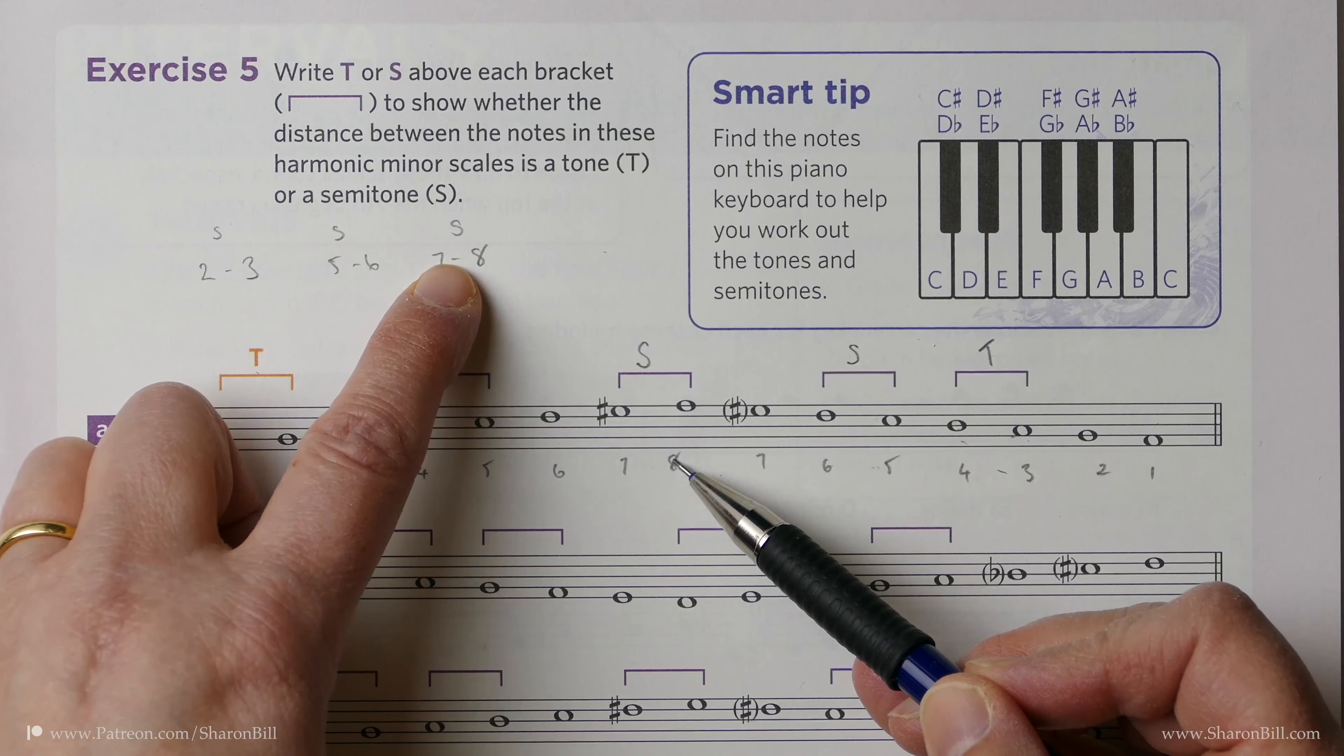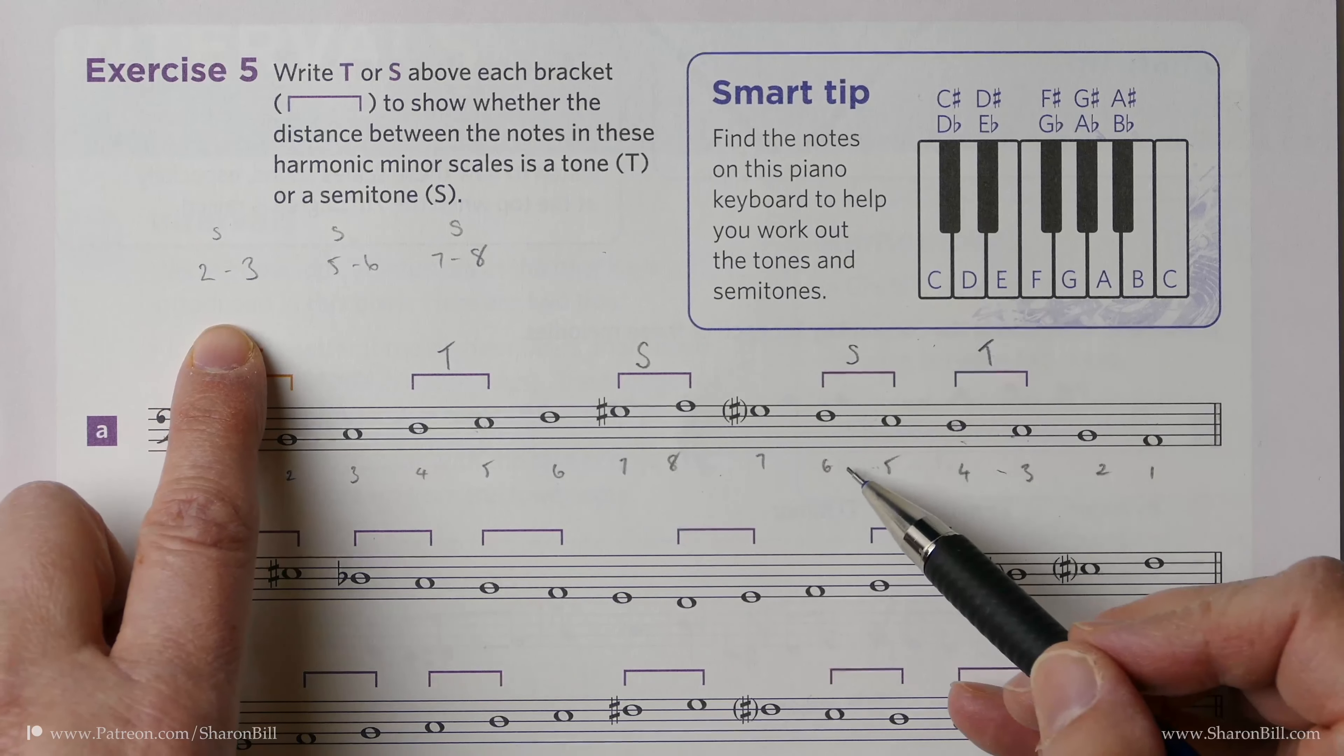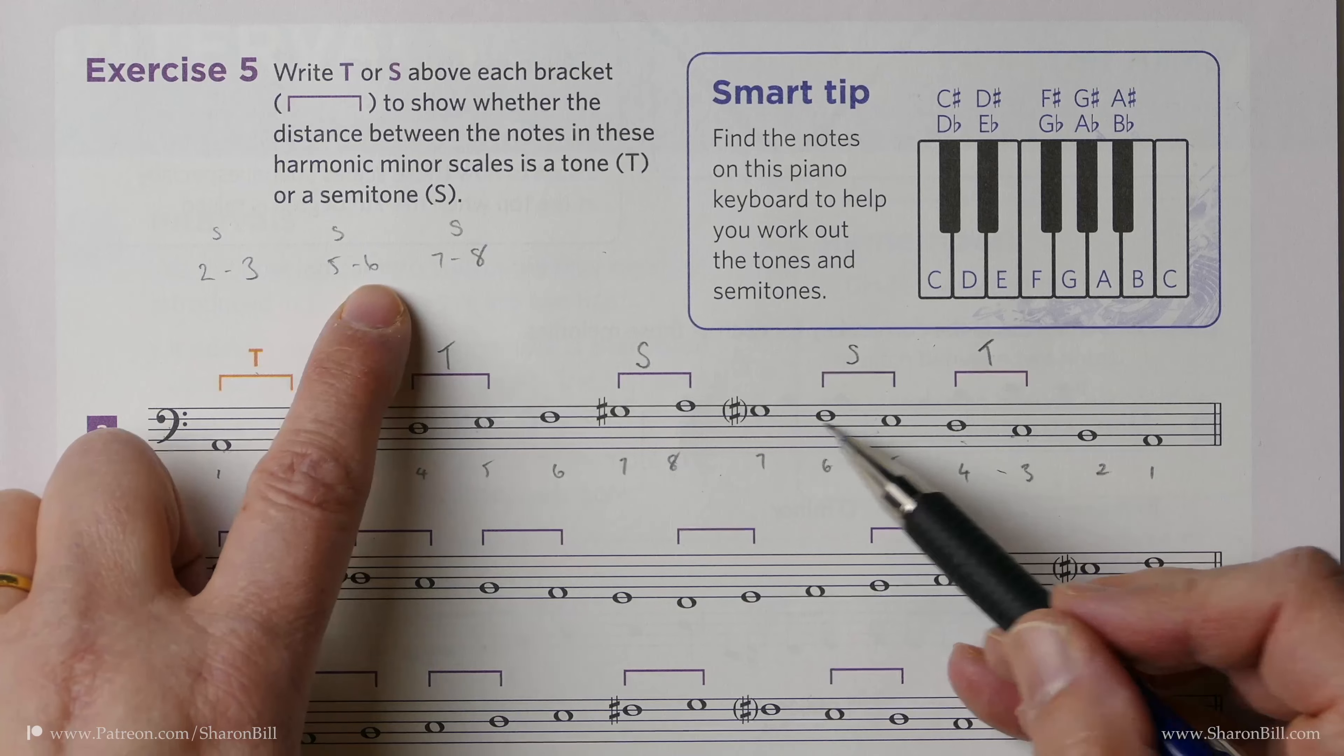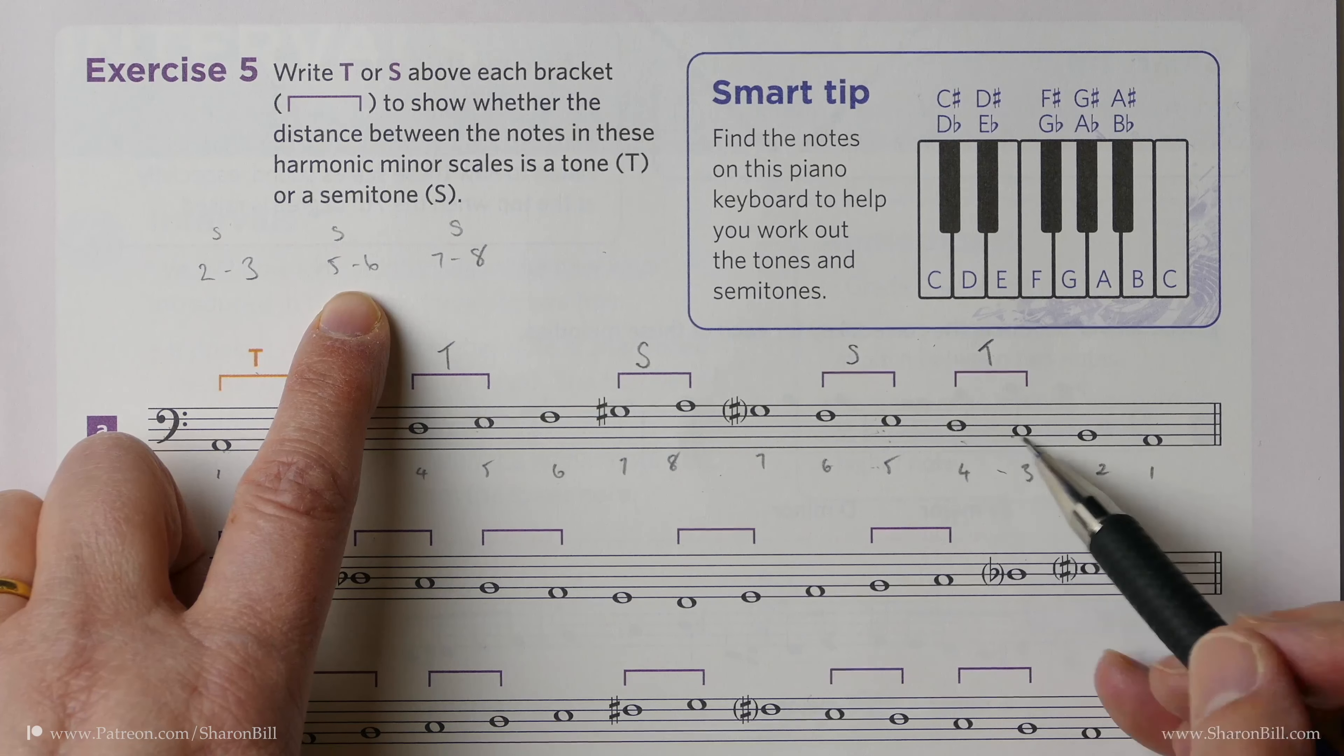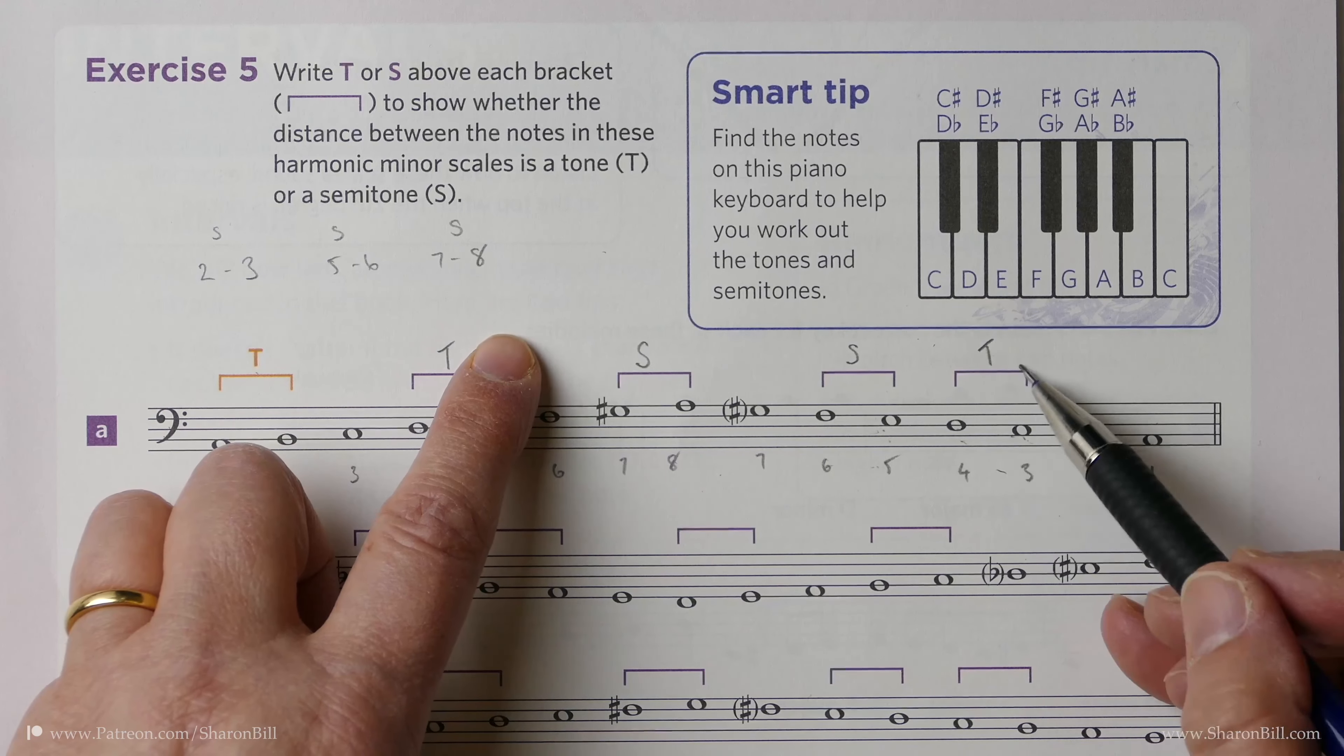We can see 7 to 8 is a semitone. 4 to 5 is not a semitone, it's a tone. 6 to 5 is a semitone. 4 to 3 is not part of the semitone pattern and so it must be a tone.